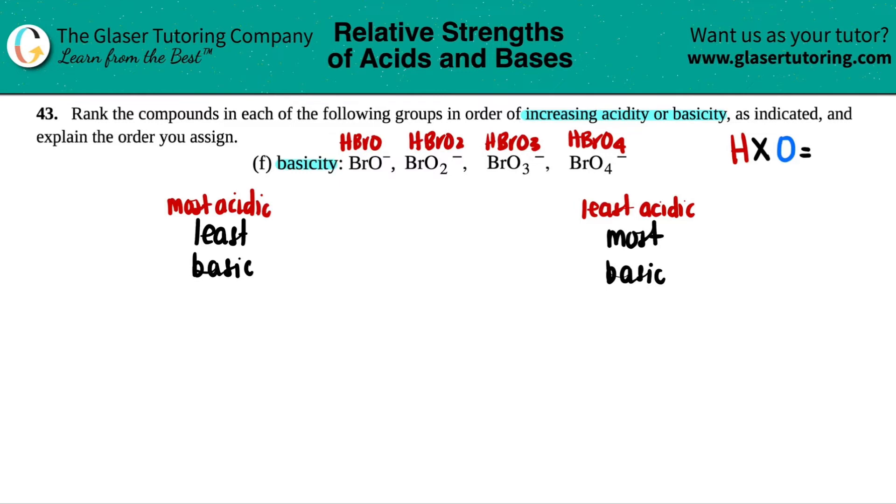Remember, these are called oxoacids. Oxo because they all have oxygen in them, and hydrogen for acid. Now, just note that if you have the same element, and for this case, we do, we just have bromines, I can't really use the periodic table to make a relationship, but for oxoacids, the higher the number of oxygens, so the more oxygens you have, the more acidic your molecule is.